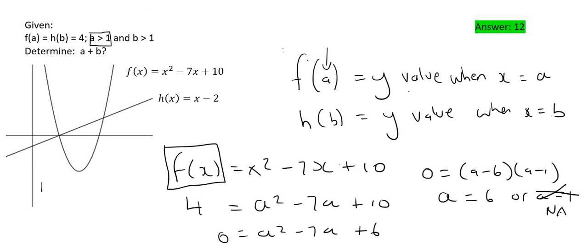So we know that h of x is equal to x minus 2, and they tell us that when x is equal to b, then the y value is equal to 4. So we're going to go 4 is equal to b minus 2, so b is equal to 6. So both a is 6 and b is 6. So now they said what is a plus b? Well that's just going to be 6 plus 6, which is 12.